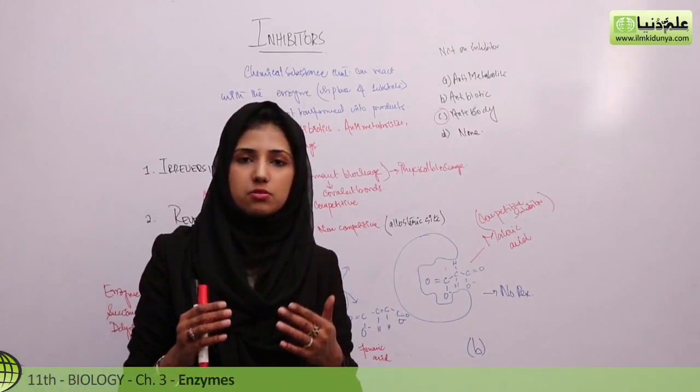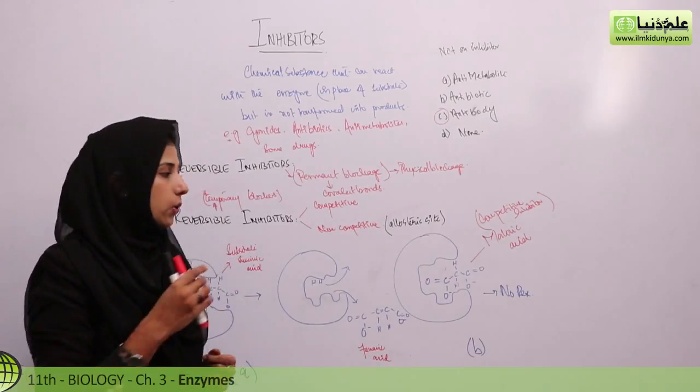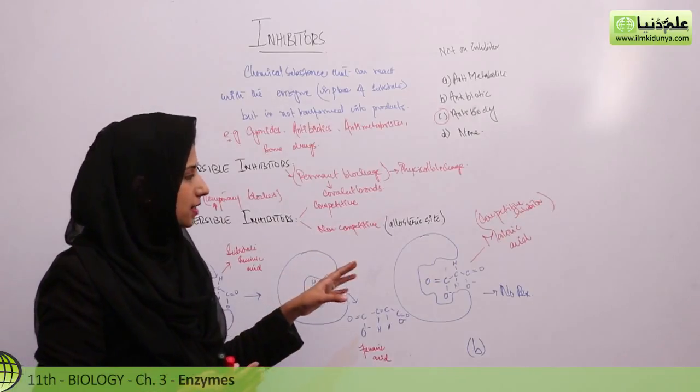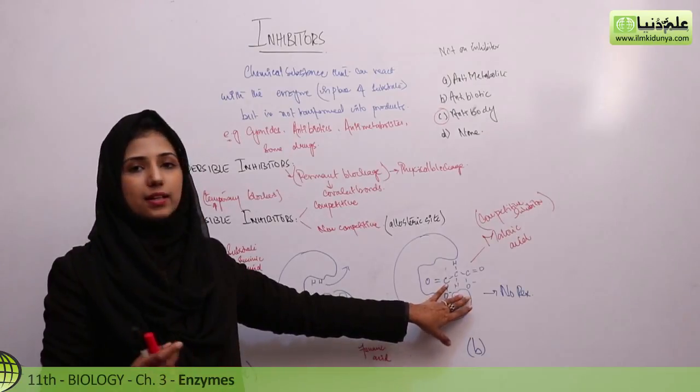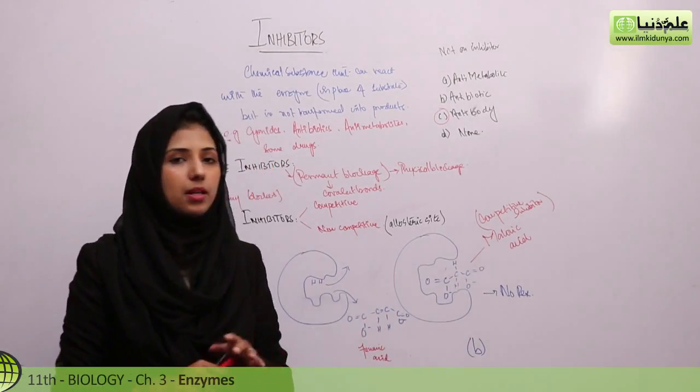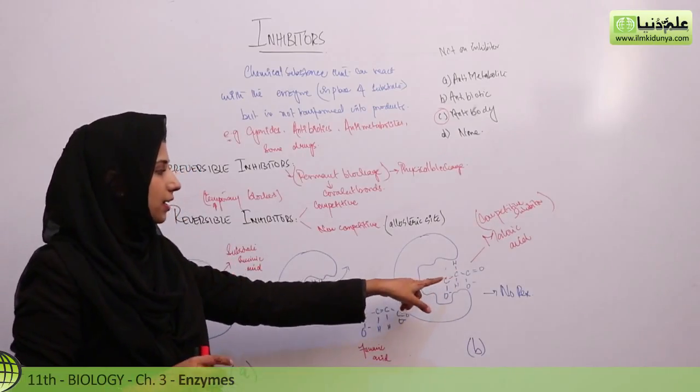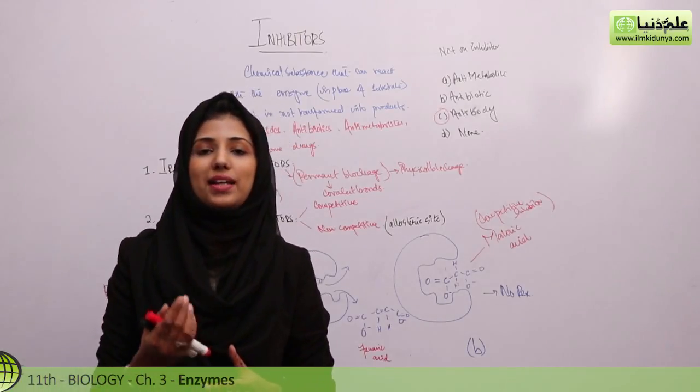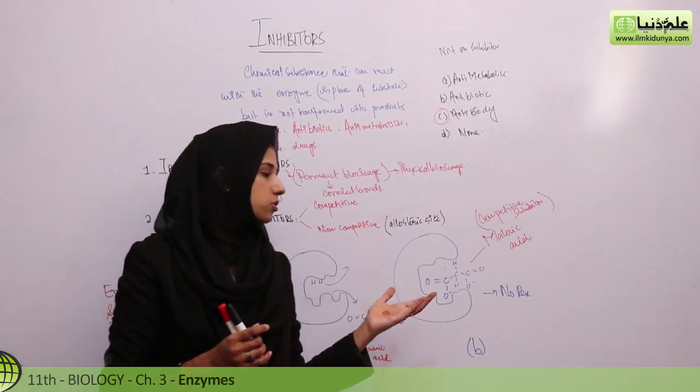But if instead of succinic acid, there's an inhibitor with structural similarity to succinic acid - malonic acid - then the enzyme will not be compatible with that inhibitor. As a result, the reaction will not be possible. This is an example of competitive inhibitor: malonic acid competed with succinic acid for the active site of the enzyme, so the product was not formed.